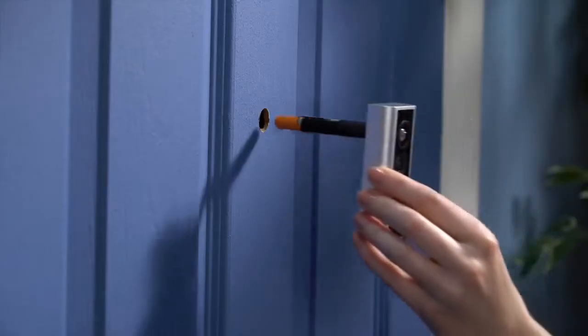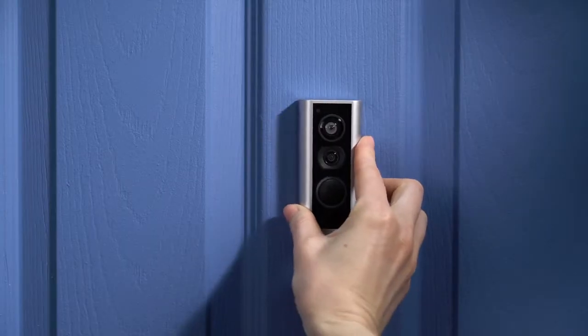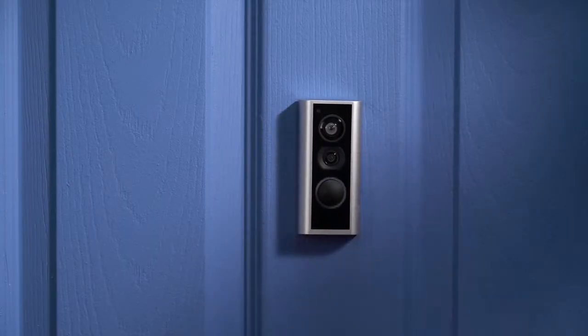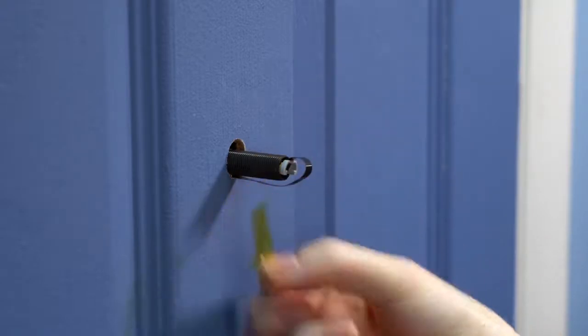With the peephole removed, insert the outdoor assembly through the hole until your peephole cam sits flush against the door. If your peephole cam has yellow tape securing the cable to the tube, peel it off and discard it now.